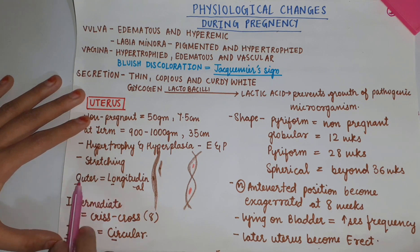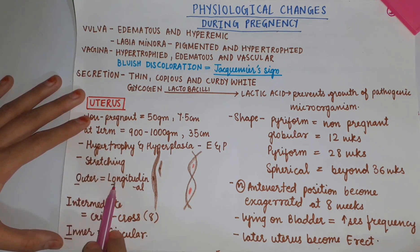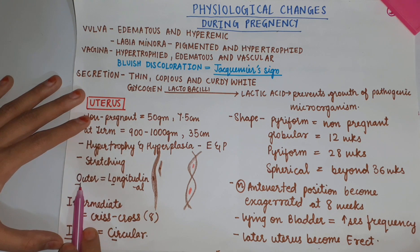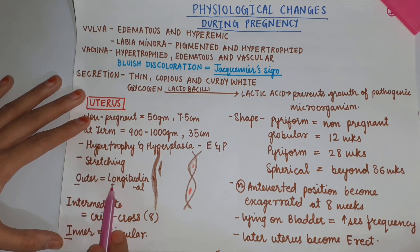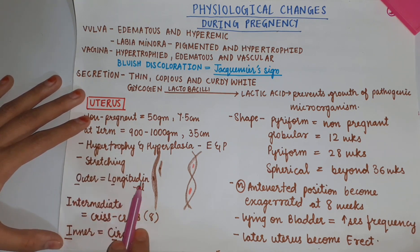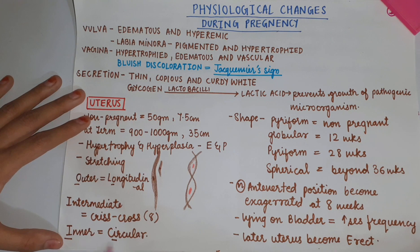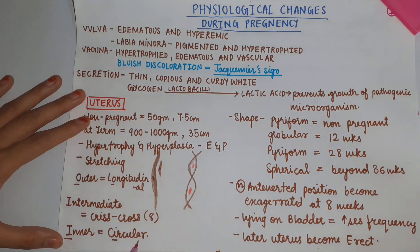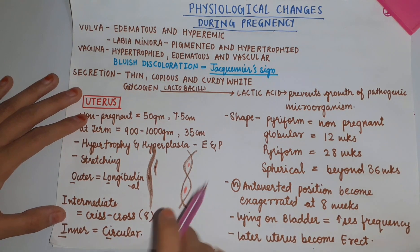We can remember this: 'O' is the first letter in 'outer' and the second letter in 'longitudinal'. In inner and circular, 'I' is the first letter in 'inner' and 'I' is the second letter in 'circular'.